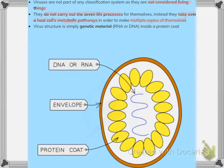The virus structure consists of genetic material — either RNA or DNA — enclosed inside a protein coat. There is also an envelope around the outside. This is illustrated in the diagram.